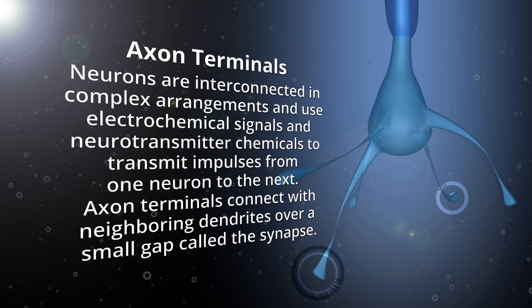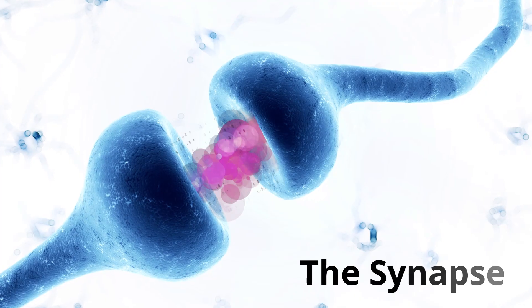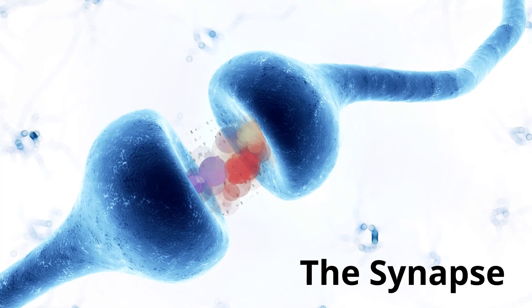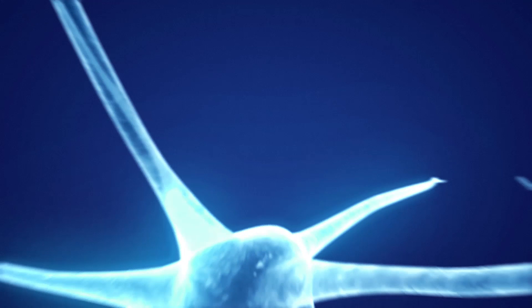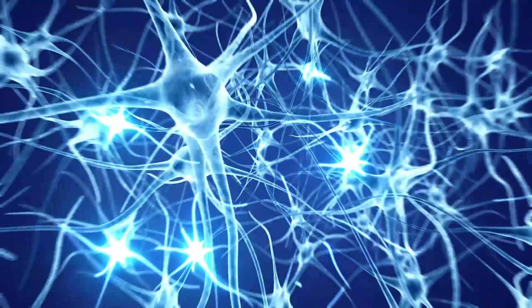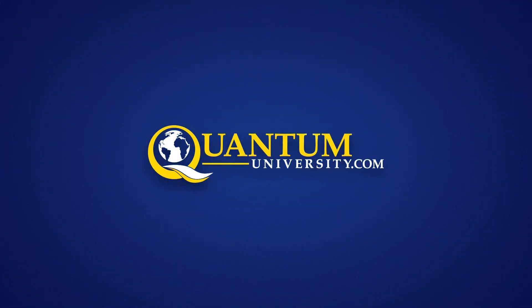Axon terminals. Neurons are interconnected in complex arrangements and use electrochemical signals and neurotransmitter impulses from one neuron to the next. Axon terminals connect with neighboring dendrites over a small gap called the synapse.